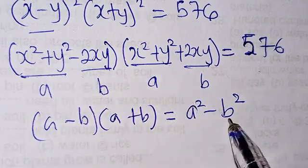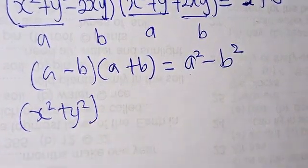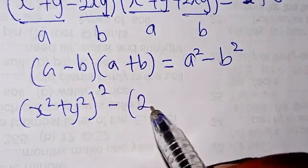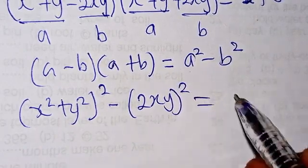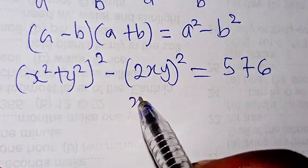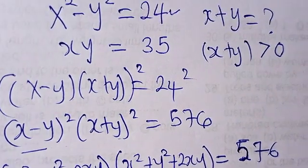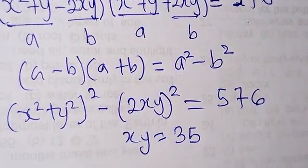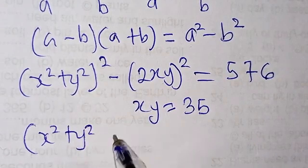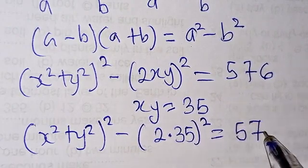This gives us x squared plus y squared all squared minus 2xy all squared equals 576. Since xy equals 35 from the problem, I replace xy with 35, giving us x squared plus y squared all squared minus 2 times 35 all squared equals 576.